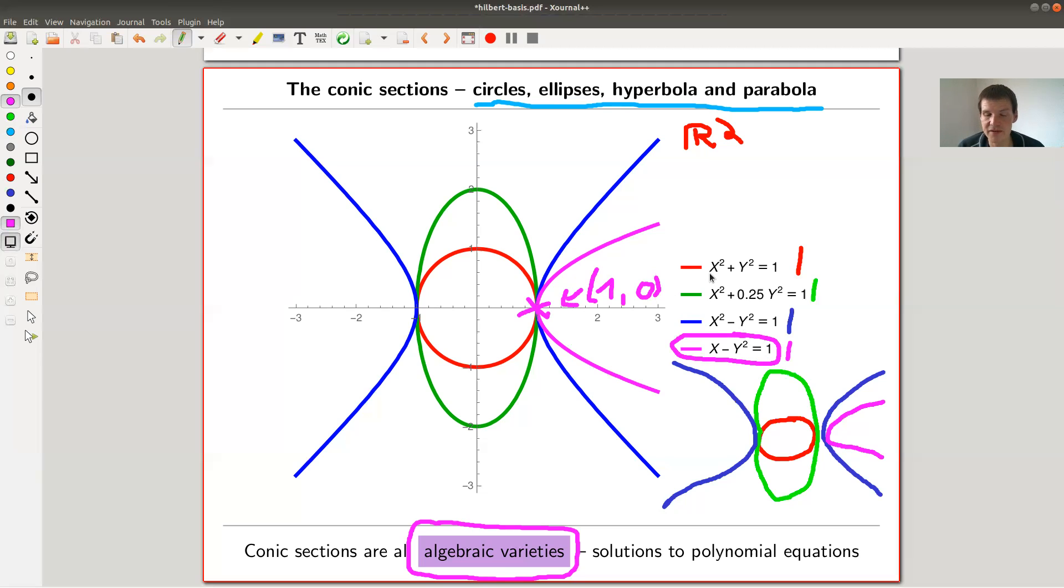So algebraic variety is kind of this generalization of this idea of having very nice geometric objects given by certain formulas. And what is a good formula in mathematics? Well, polynomials. Absolutely every mathematician likes polynomials. And zero sets of polynomials are nice objects. And they are part of algebraic geometry, or geometry in general. So this is kind of the object of the study.